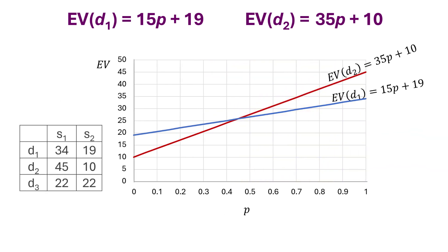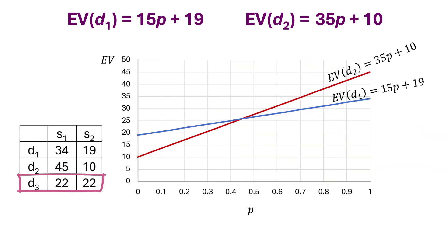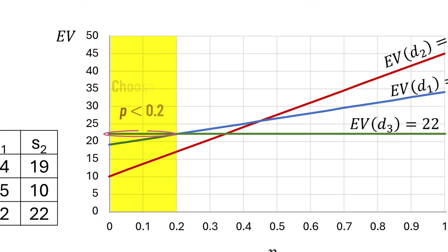Now, suppose there is a third decision alternative, D3, with a constant payoff of 22 under both states of nature. Then the expected value of D3 will be 22, represented by this horizontal line in green. Now, D3 will be the preferred alternative if P is less than 0.2. At P equals 0.2, the decision maker will be indifferent between D1 and D3. Between P equals 0.2 and P equals 0.45, D1 will be the preferred alternative. And D2 will be preferred when P is greater than 0.45.